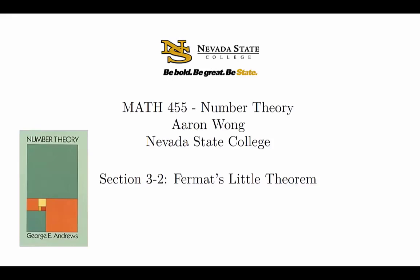Fermat's Little Theorem is an important result in number theory. It seems simple and isn't too difficult to discover through some calculations and explorations, but it has a lot of very important implications. The proof we will see is a combinatorial proof, which is a fancy way of saying that we're doing a proof by counting. Many combinatorial proofs begin by thinking about a situation that initially seems like it has nothing to do with the actual problem at hand, then it all comes together at the very end. In this video, we're going to look at a special case of the proof that will highlight the big ideas, and then we'll do the full proof in class.